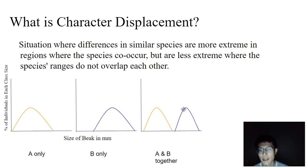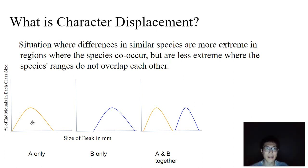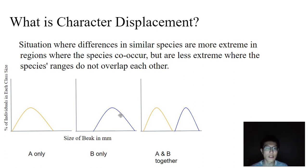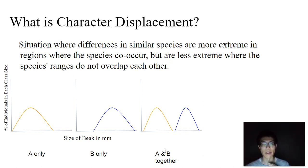But when you have island 3, a situation where both species A and B are found together, you see something very interesting. You can see that the beak sizes are actually dispersed and displaced to more extreme ends. Species A originally tends towards the smaller end of the spectrum, but it actually tends even more towards the smaller end when species A and B are found together. Similarly, species B tends originally towards the higher end, but that is even more extreme — pushed even further towards the higher end when they're found together.